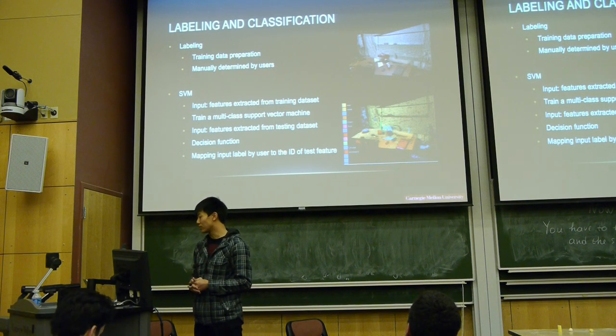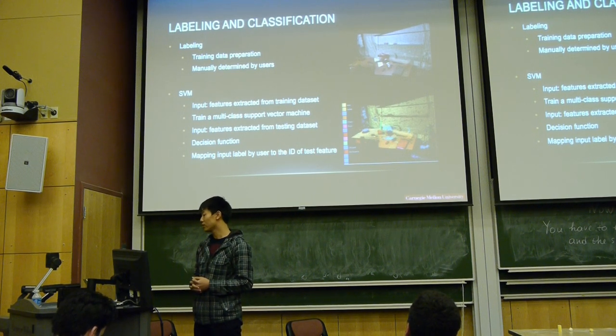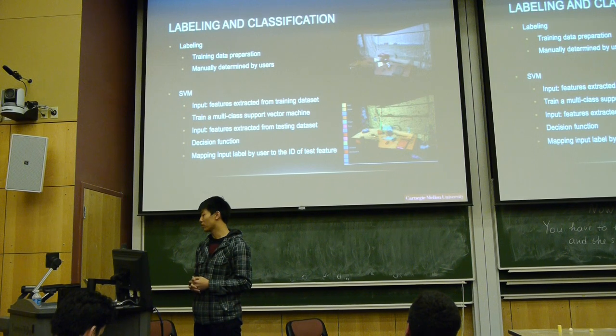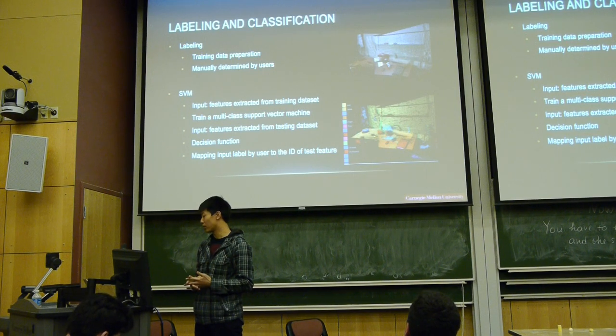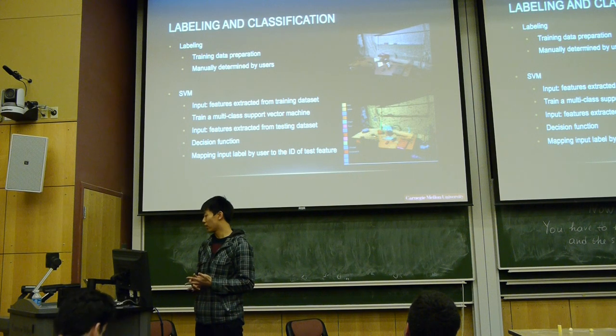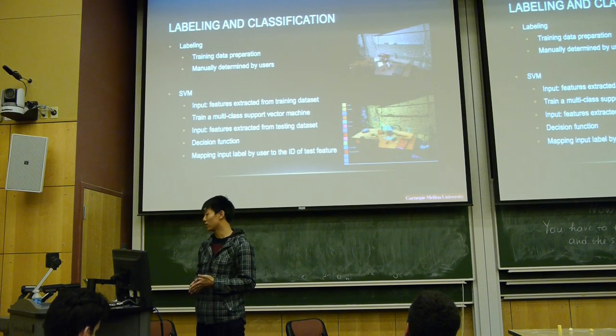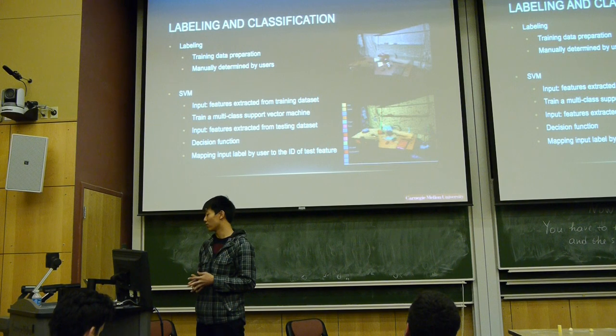On this part, the SVM code takes as input the features extracted from the training data set and trains a multi-class support vector machine. And after that, it will take as input features extracted from the testing data set and then find the certain feature from the different testing feature and classify each of them.